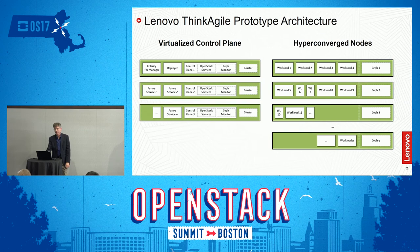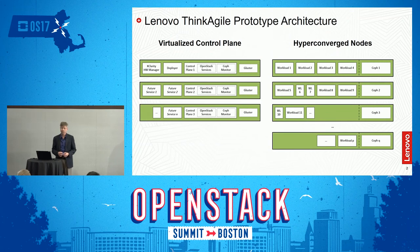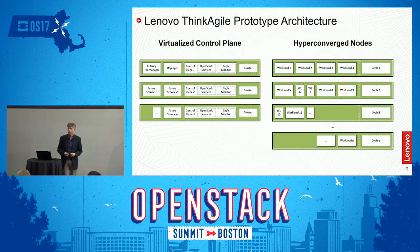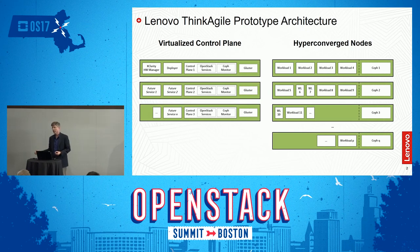We had a requirement from our China Geo to define an architecture — really a product — that could start very small, implement an OpenStack cloud very small, but have the potential to grow large. That naturally led us to look at a hyper-converged architecture. We put together a design that combined both a converged or hyper-converged control plane, a virtualized control plane, and hyper-converged on the data plane or workload plane.